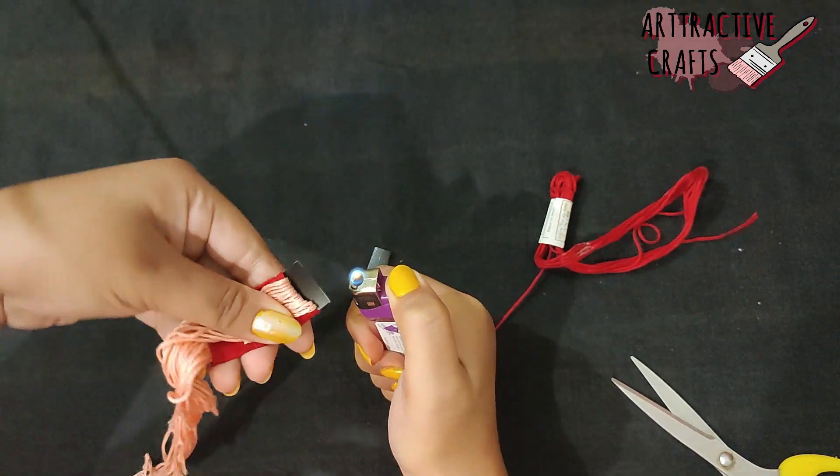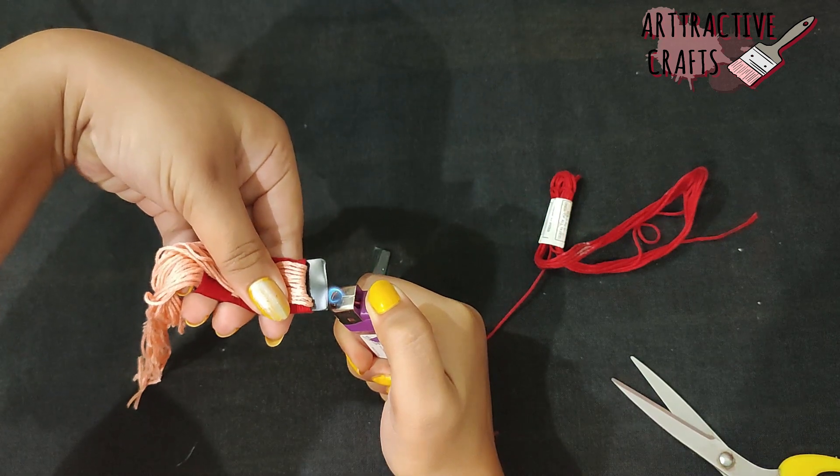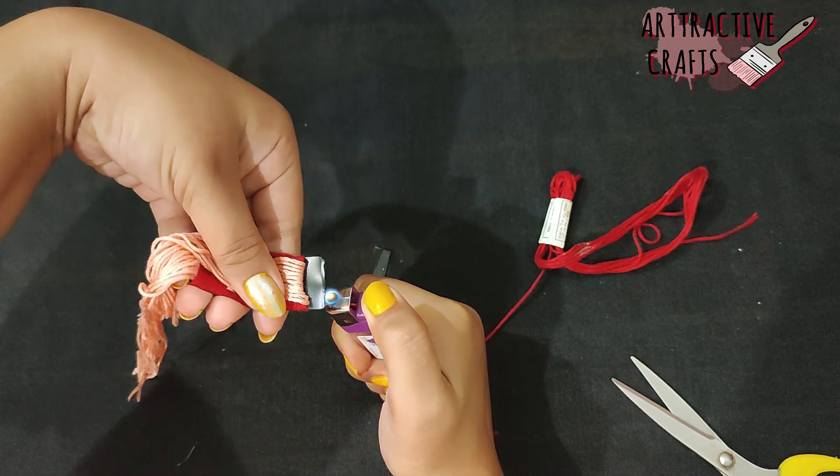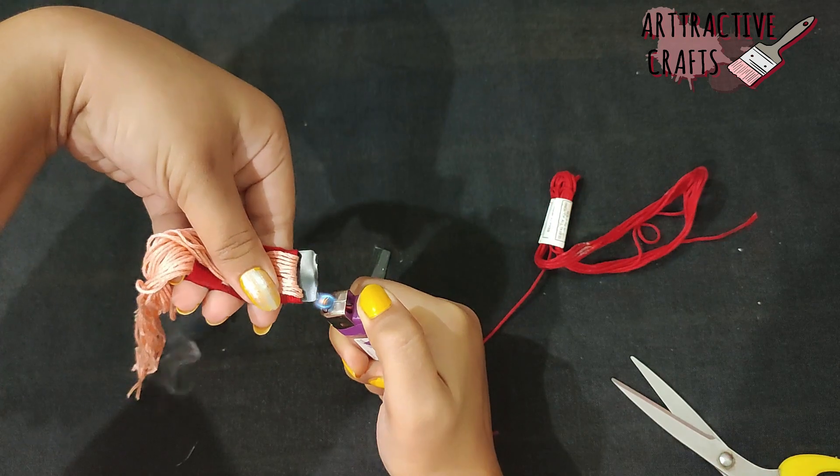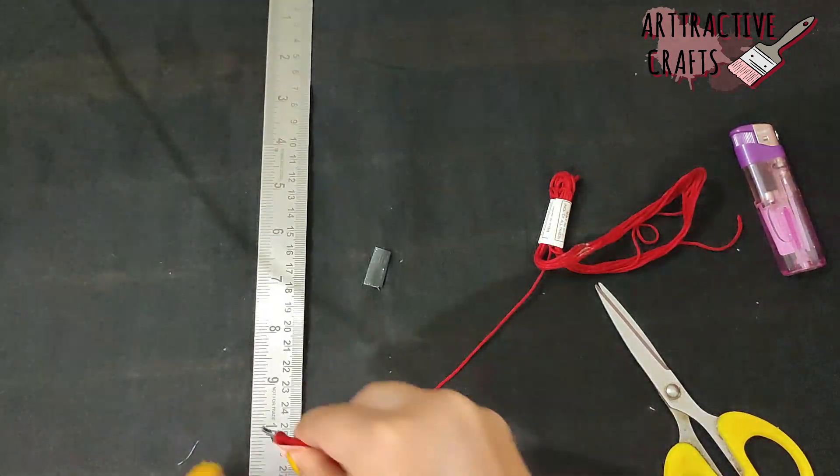Melt the remaining part of the plastic to tightly secure the winding. Be careful or else you may burn your fingers. You can use a metal clip or pliers to press it.